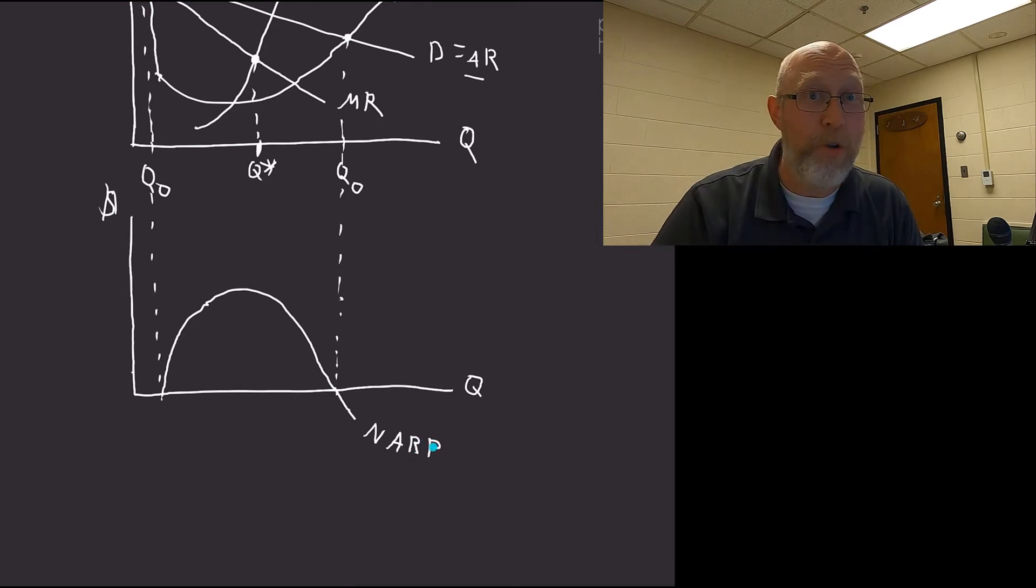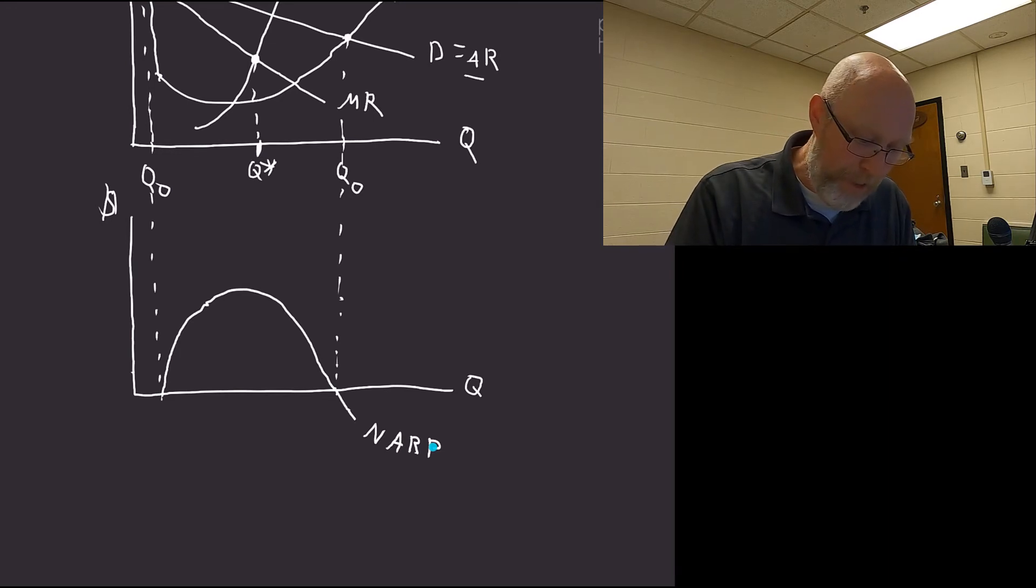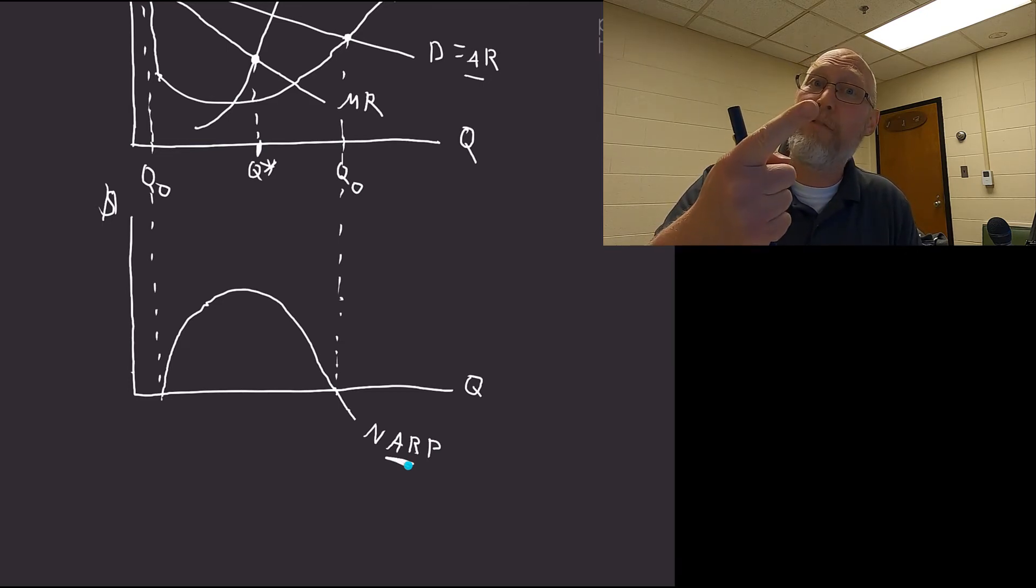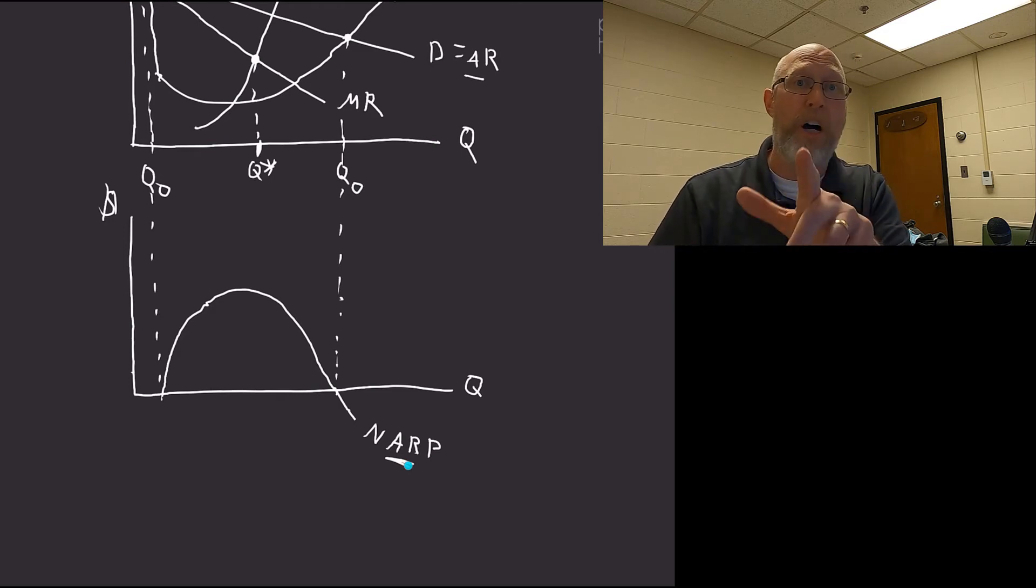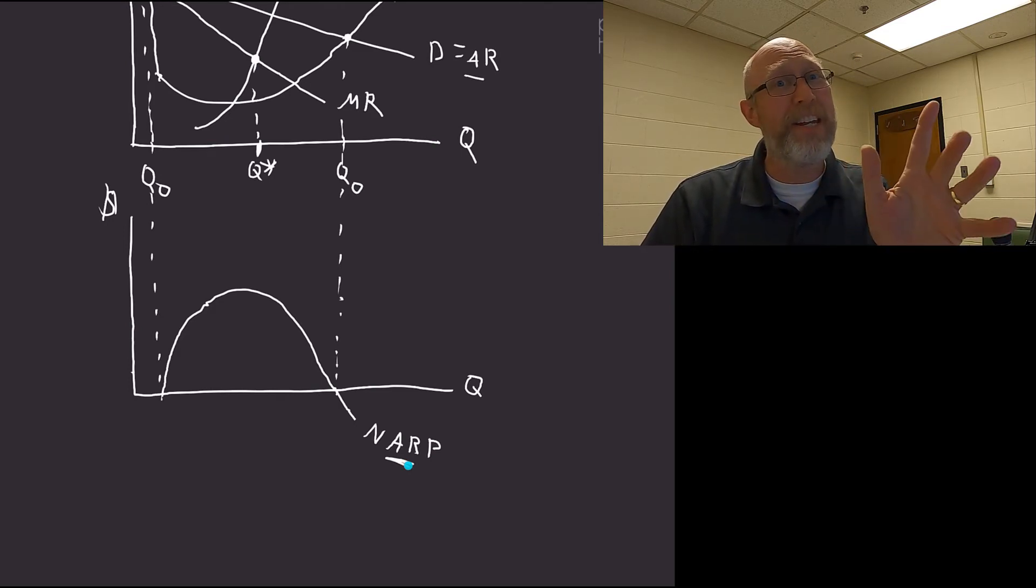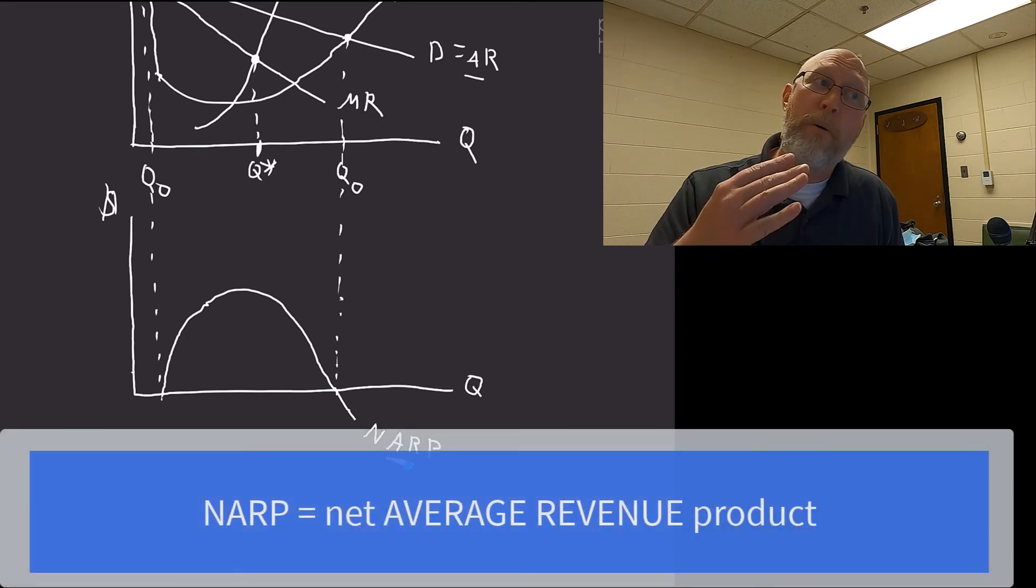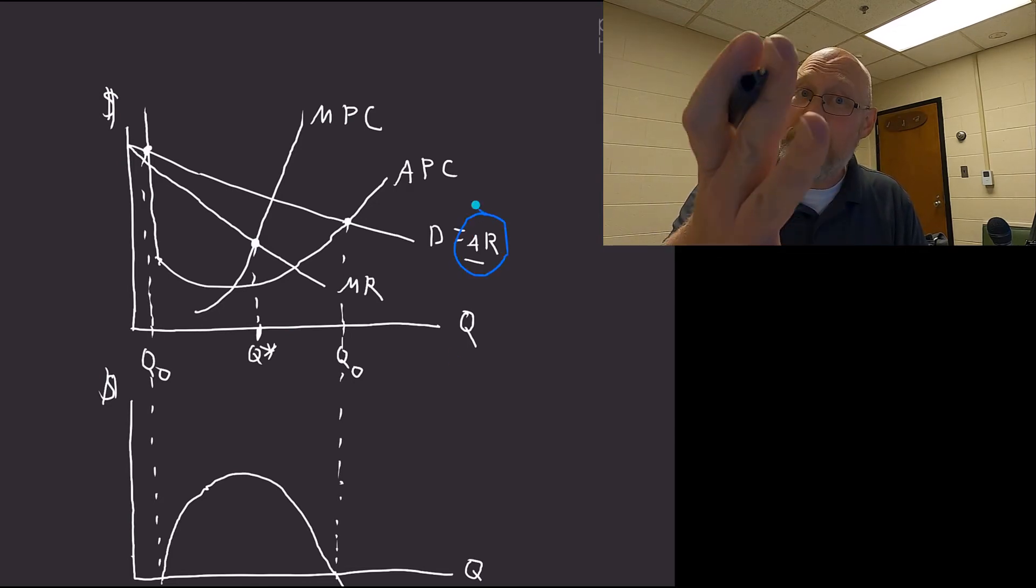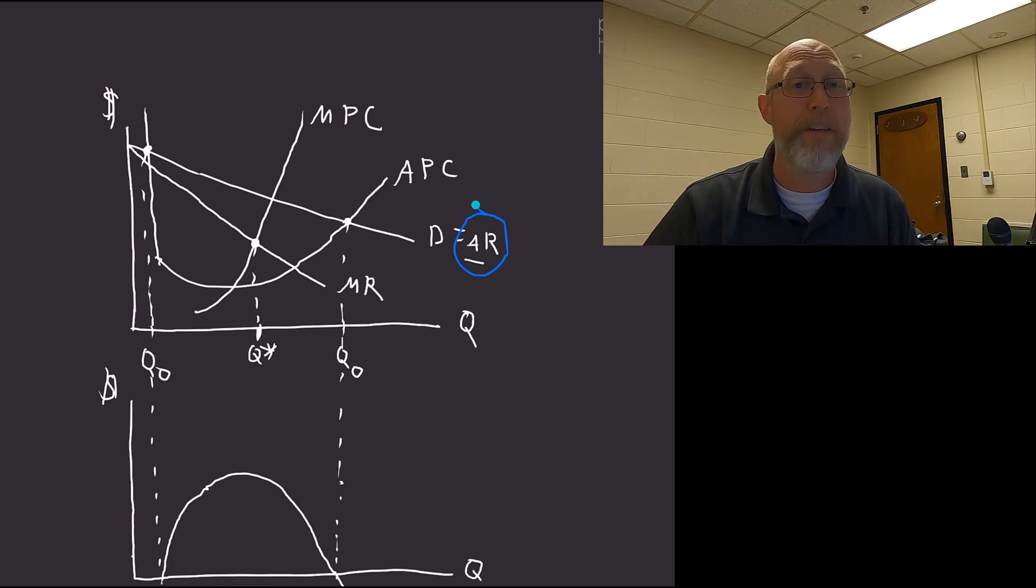The part of NARP I want you to pay attention to is AR. NARP is just a special type of average revenue. It's the net average revenue of processing. Some textbooks call it the net average revenue product. For our purposes it is nothing more than an average revenue. Here on the diagram we have an average revenue curve, and at that point the average revenue curve is the demand curve. So our NARP, our net average revenue product, is an analog to a demand curve.